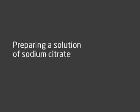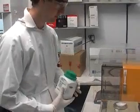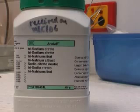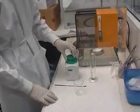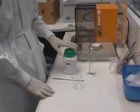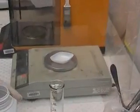Jason is making the 5% sodium citrate solution used to create the gold nanoparticles. The citrate reduces the gold ions to gold atoms. It also acts as a shielding agent, meaning that the gold atoms stay as nanoparticles because they are coated in citrate. Jason is weighing the sodium citrate, which will then be dissolved in 100 millilitres of water to create a 5% solution.